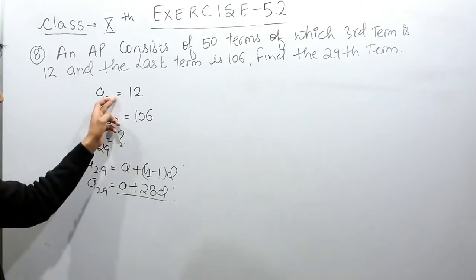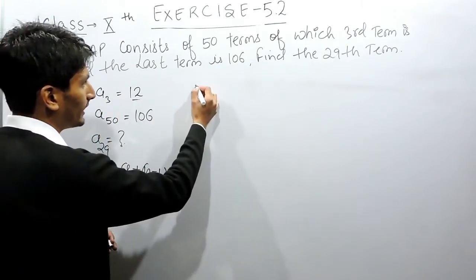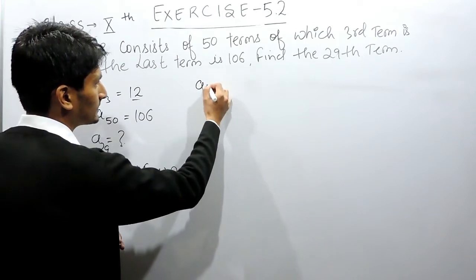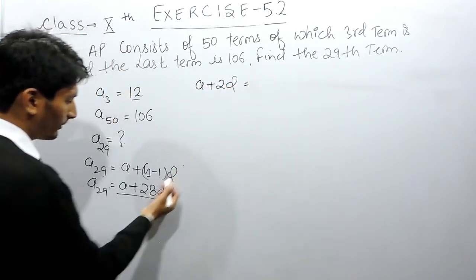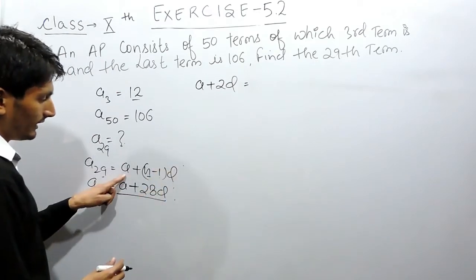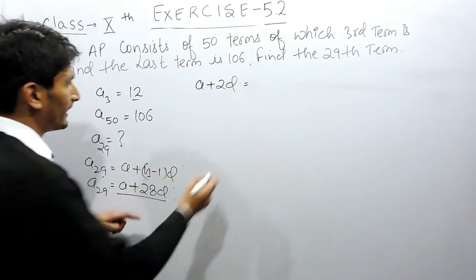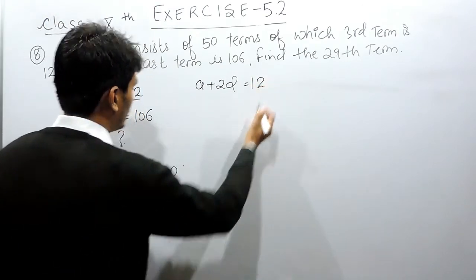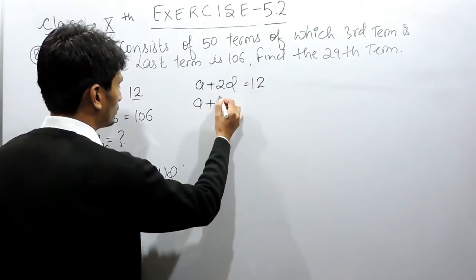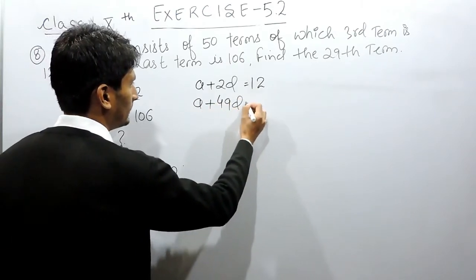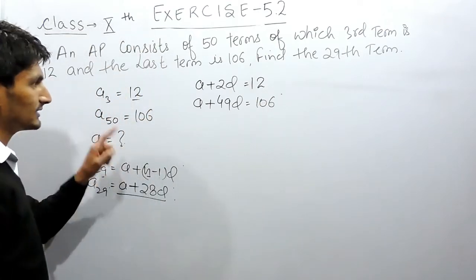And these two values we can find out using these two equations. So the third term is 12 and we know that the third term equals A + 2D. The same formula is applied here: A plus 3 minus 1, which is 2D, and that is given to you as 12. And the last term which is the 50th term, so this should be A + 49D = 106.